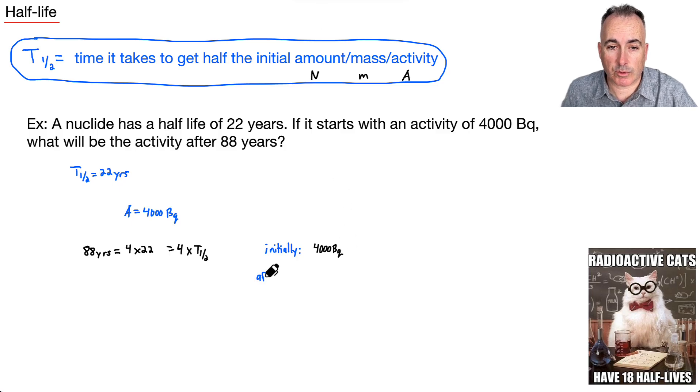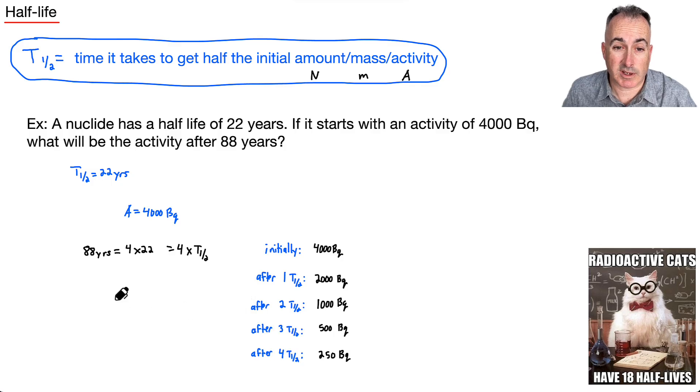So let's see. Initially, we have 4,000 Becquerels. Now what do we do? After one T₁/₂, after one half-life, what happens? This goes down by half. So that means half of 4,000 is going to be 2,000. That's one half-life, and we just keep going again. After two, it's going to be half of that, so that's going to be 1,000. And you just keep going until you get to four half-lives. After four half-lives, in other words, this is after 88 years, you end up with an activity of 250 Becquerels.